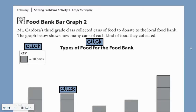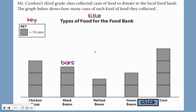Some important things about a graph: you're going to have a title on all of your graphs — that's important because it tells you what you're looking at and what the graph is about. You may or may not have a key. Our first bar graph didn't have a key, but the second one does, and so did the last one with the pictures of the cans. You may have bars — the last one with the pictures didn't have bars, but a bar graph will have bars. And you will always have labels. You'll have to label what you're looking at, so I know that this is corn, this is green beans — each of those graphs had labels.